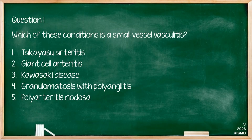Which of these conditions is a small vessel vasculitis? The options are Takayasu Arteritis, Giant Cell Arteritis, Kawasaki Disease, Granulomatosis with Polyangiitis, and Polyarteritis Nodosa. From the Chapel Hill classification, Granulomatosis with Polyangiitis is the one which is a small vessel vasculitis.